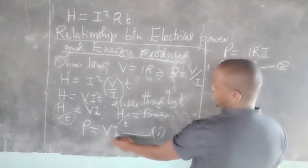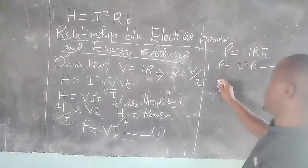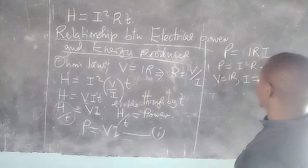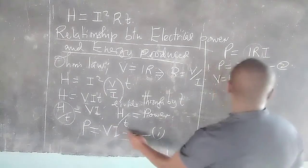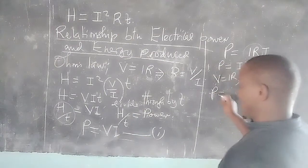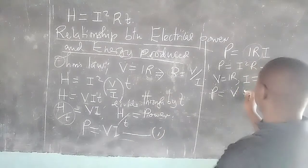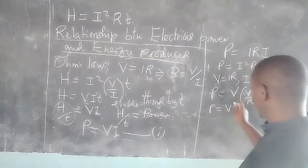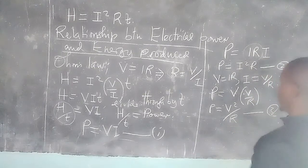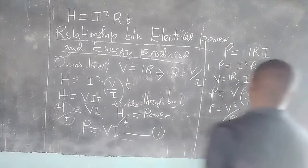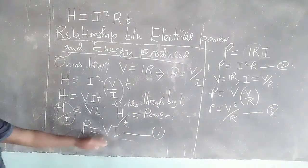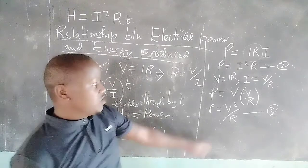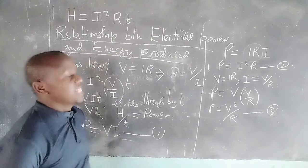Again, in this equation, instead of current I, from Ohm's law V = IR we get I = V/R. Substituting into Equation 1, power equals V multiplied by V/R, which means power can equal V²/R. This is the third equation. Therefore, electrical power can be given by: P = VI, P = I²R, or P = V²/R.